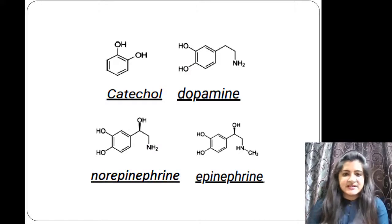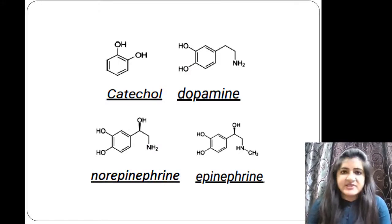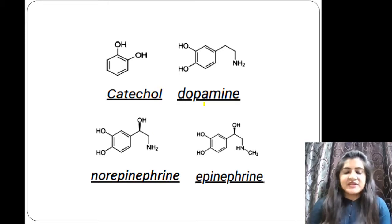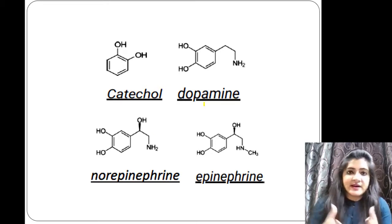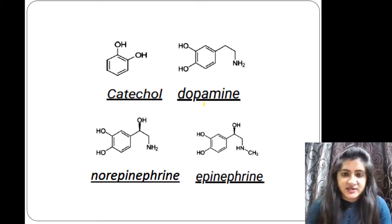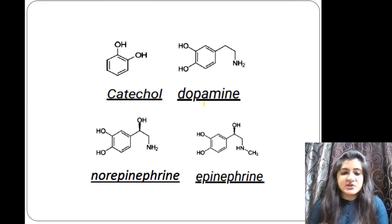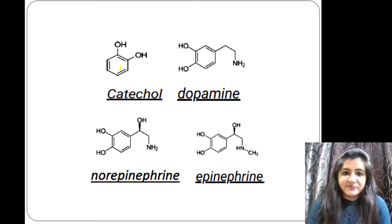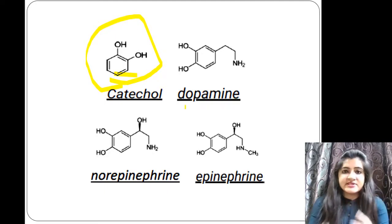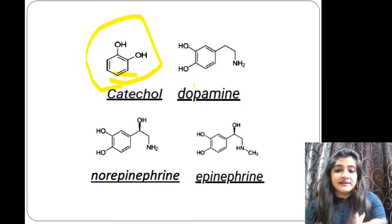These are all known as catecholamines. Catechol — see this is the structure of catechol — has a benzene ring with two hydroxyl (OH) groups present. This is our parent ring structure.